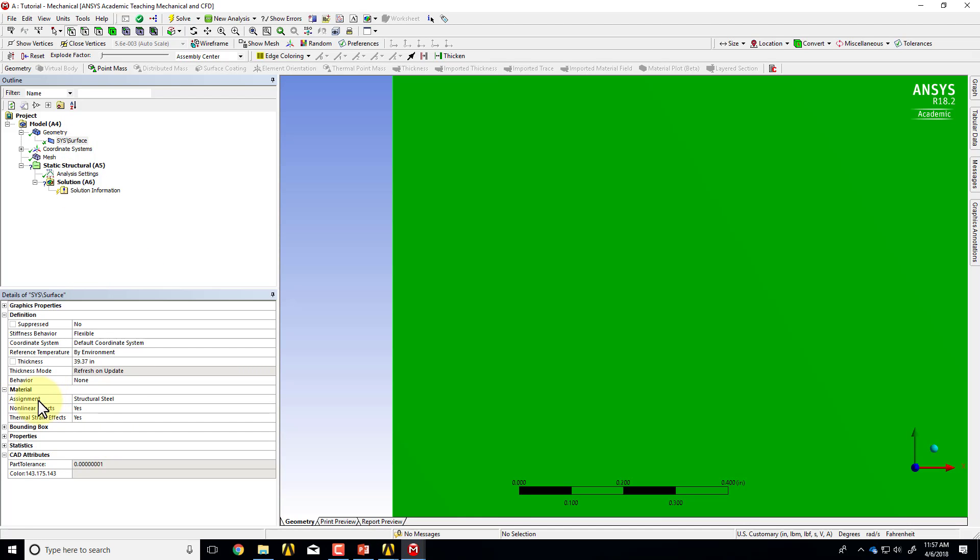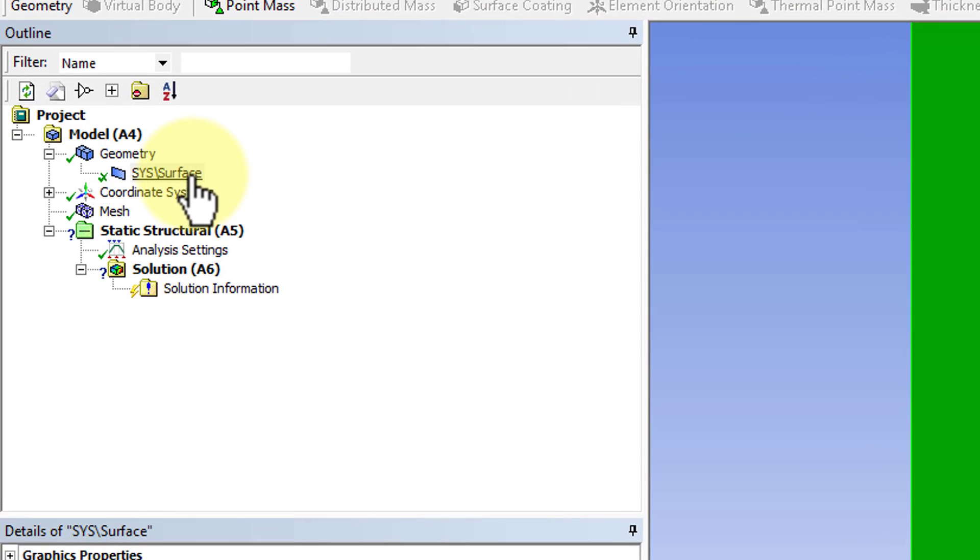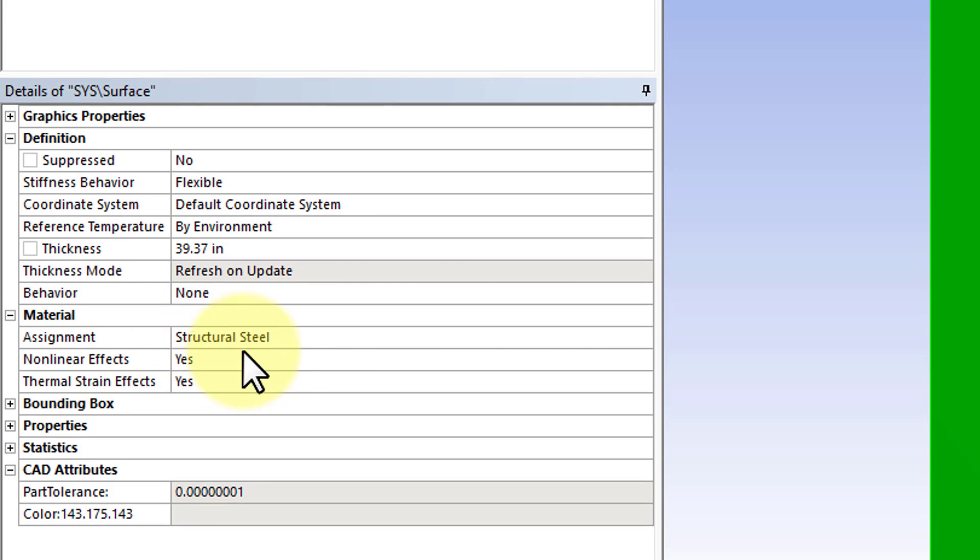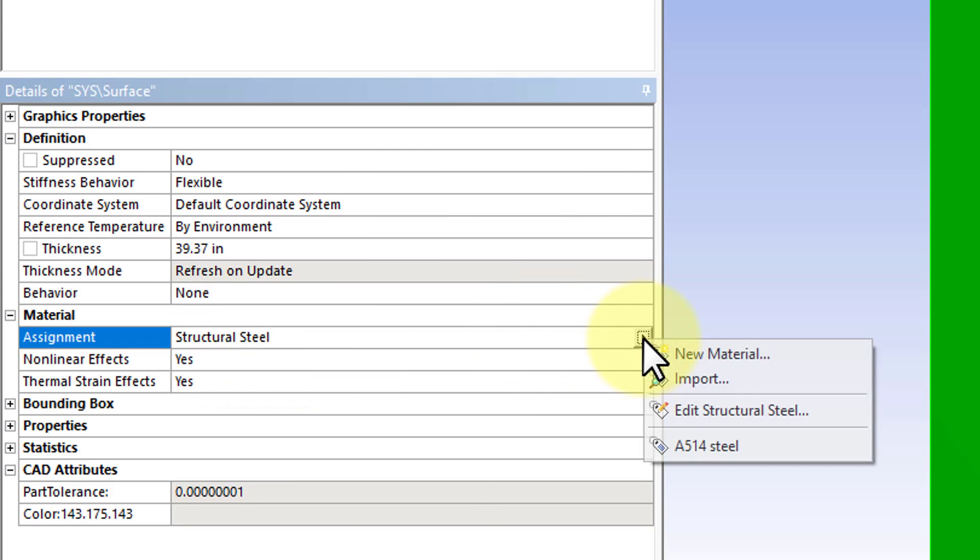Under Geometry, the surface, I can change the assignment to A514 steel. And that essentially gives it the right E, the Young's modulus and Poisson's ratio in the stress-strain relations.